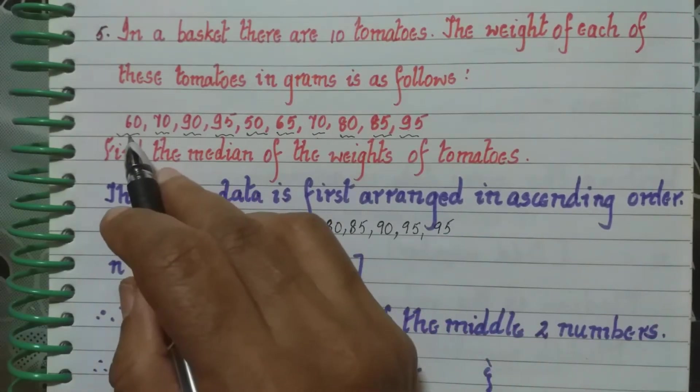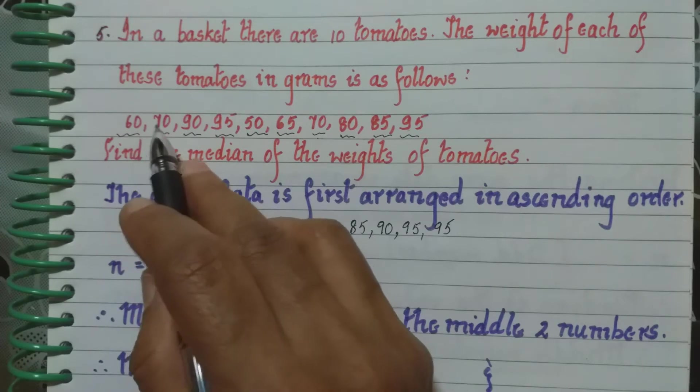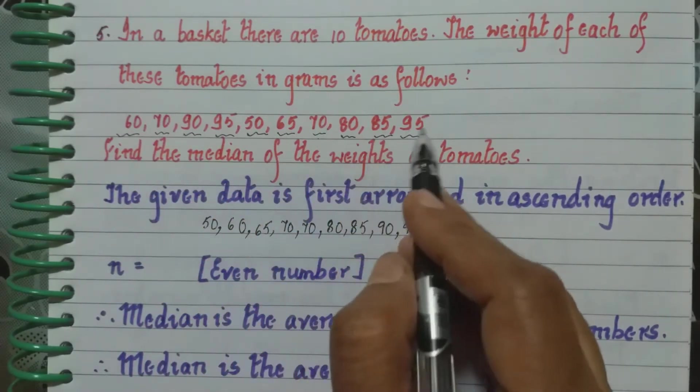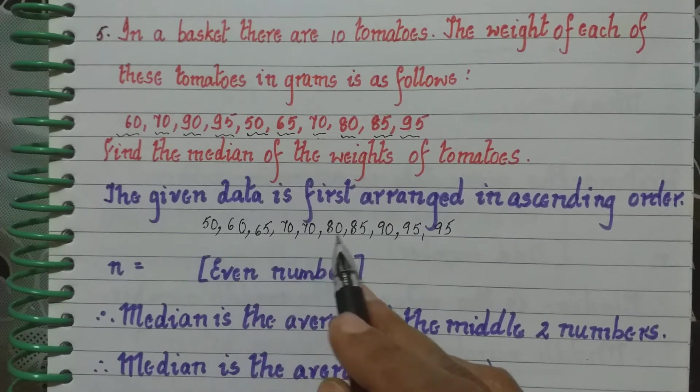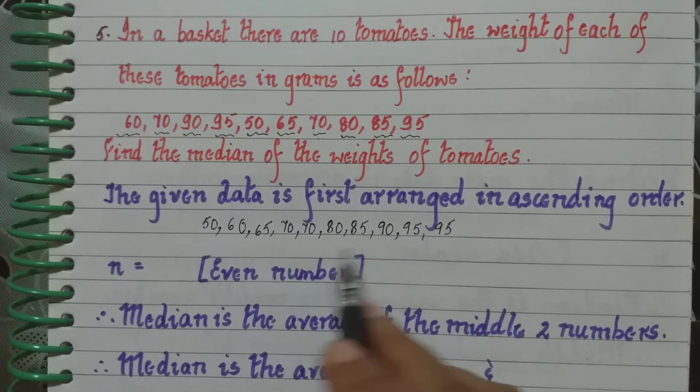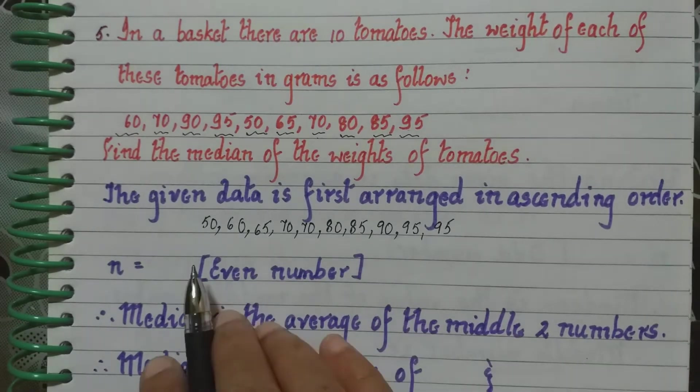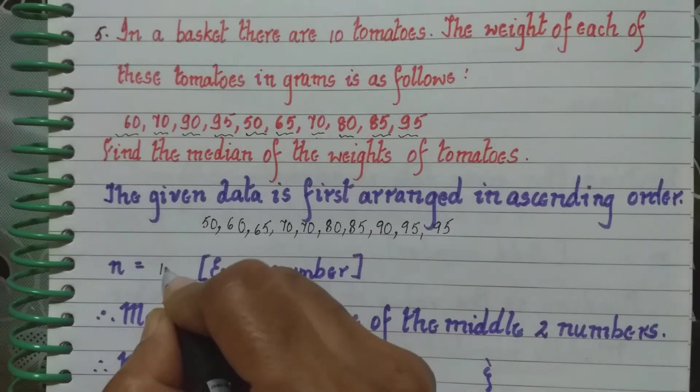So let us count the numbers here. 10 tomatoes they said. 1, 2, 3, 4, 5, 6, 7, 8, 9, 10. So here, since there are 10 observations, n is 10, which is an even number.